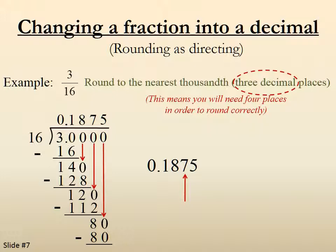We're rounding to the nearest thousandth. We look at the 5. We're going to round up. In this case, 0.188.